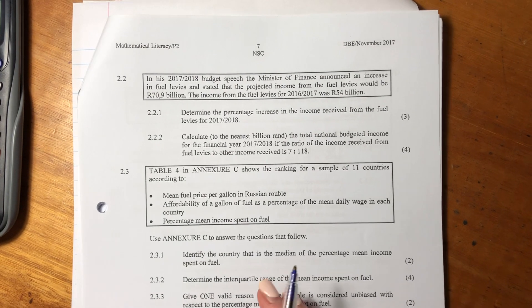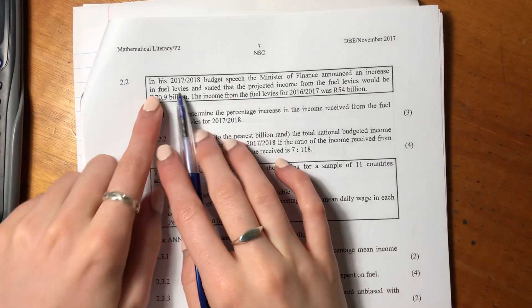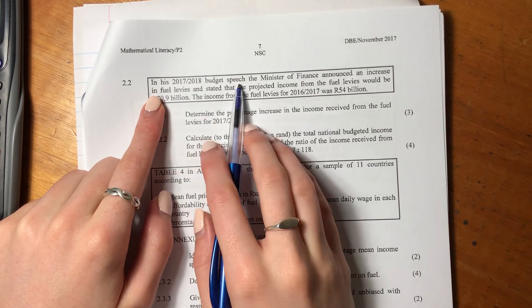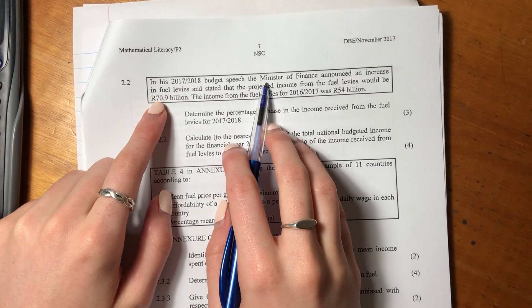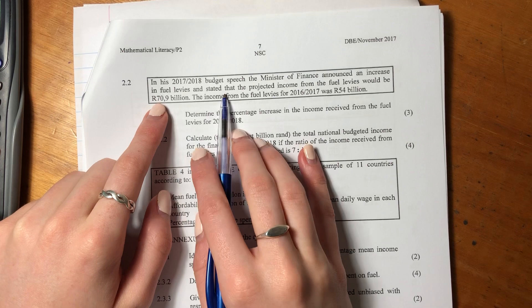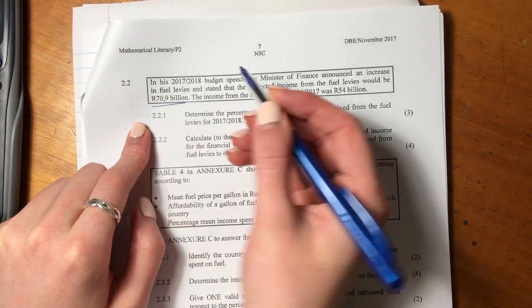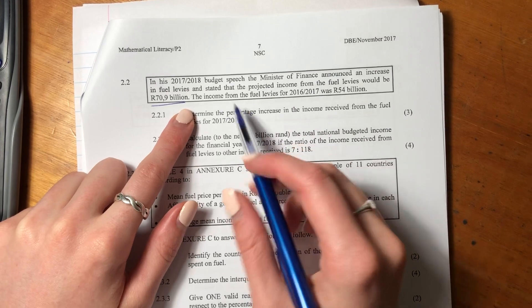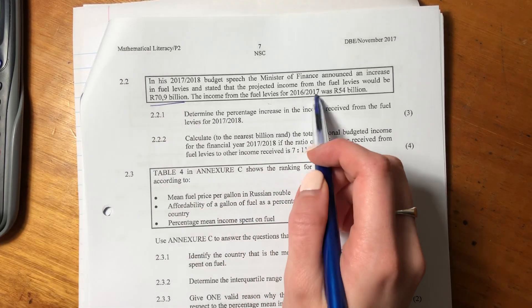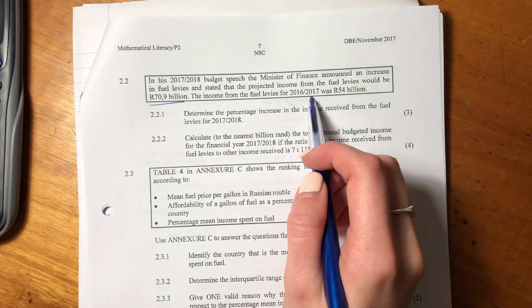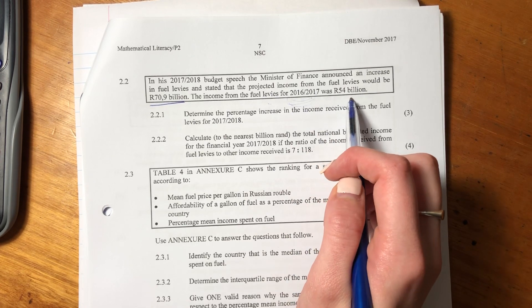Hey guys, let's now move on to question 2.2. It says, in his 2017-2018 budget speech, the Minister of Finance announced an increase in fuel levies and stated that the projected income from the fuel levies would be $70.9 billion. The income from the fuel levies for the previous year, 2016 to 2017, was $54 billion.